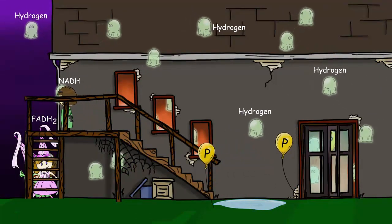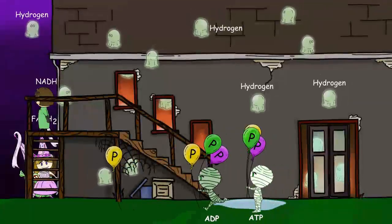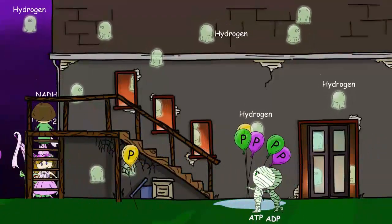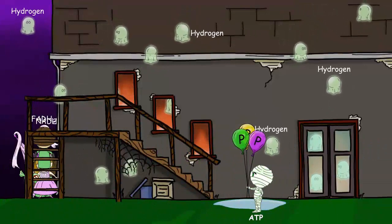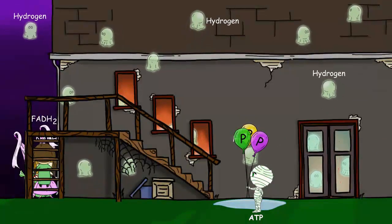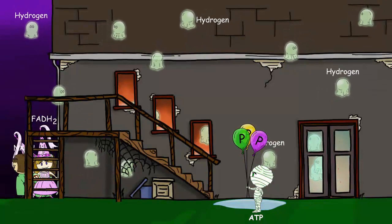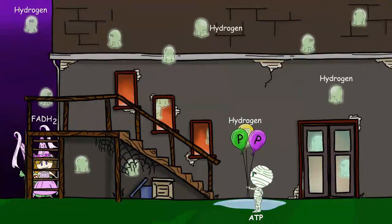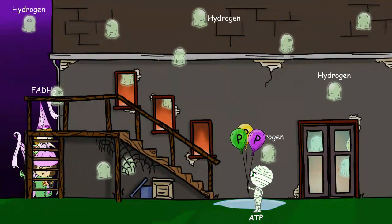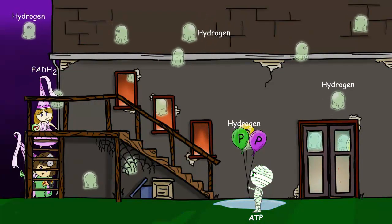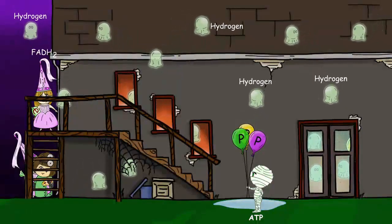The energy released is used to pump hydrogen ions across the membrane into the inner membrane space. These hydrogen ions are being pumped against their concentration gradient, so they are being moved from an area of low concentration to an area of high concentration, using the energy from the electrons. Those hydrogen ions build up in the inner membrane space and eventually rush back through the inner membrane to try and equilibrate.